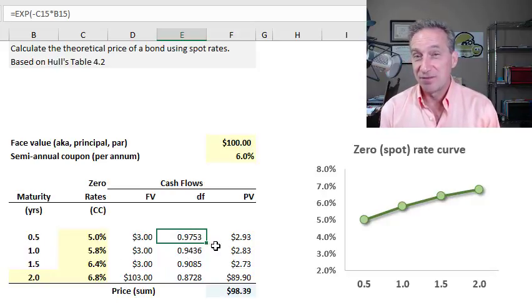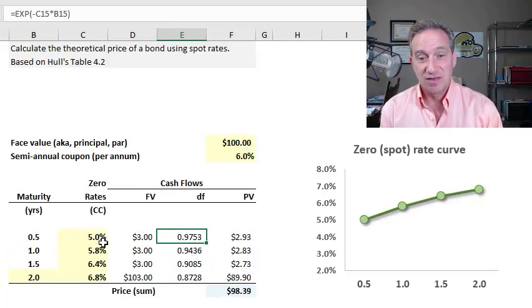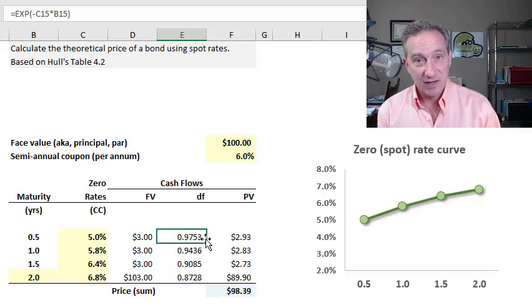So one dollar six months in the future at this spot rate, compounded continuously, has a value of ninety-seven point five three cents, so that becomes a multiplier on the future value. Now an advantage of discount factors is that they already impound the information of the compound frequency. So whereas the five percent itself is ambiguous until we specify continuous compounding, the discount factor is not ambiguous. The old saying is discount factors never lie.